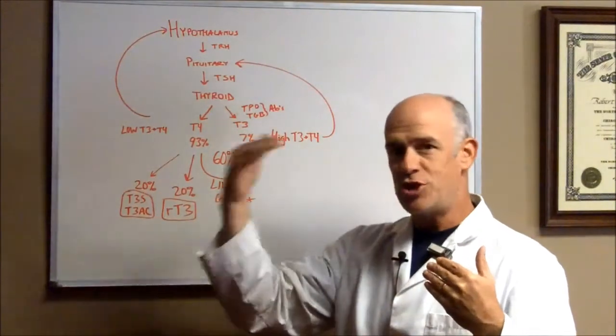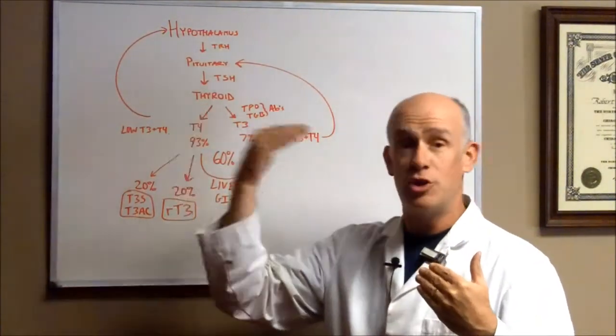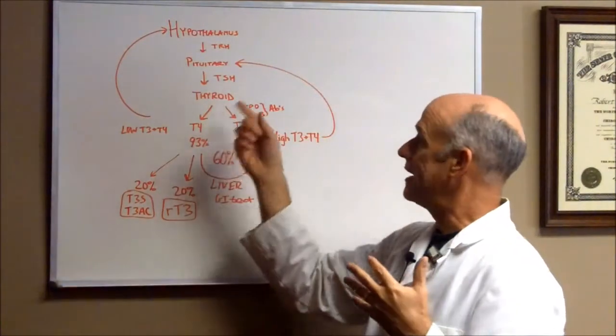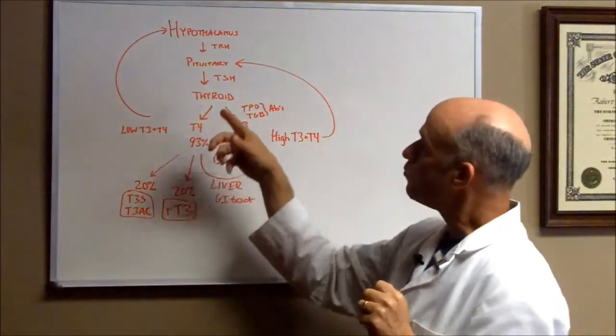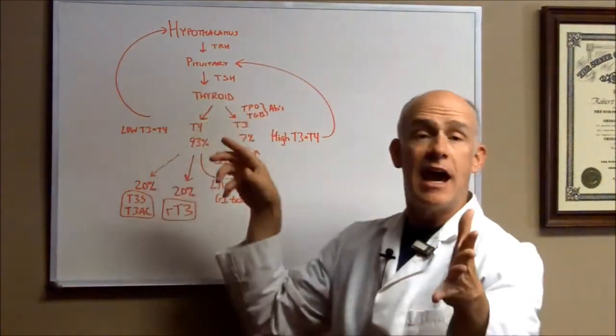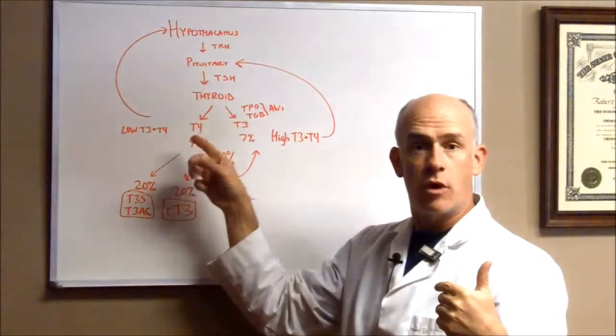So when you check your TSH, it's not telling you what the thyroid's doing. It's telling you what your pituitary is doing. And that piece of information by itself doesn't tell you what's going on in the thyroid. So the TSH gets released, and it stimulates your thyroid to release two hormones, T4 and T3.